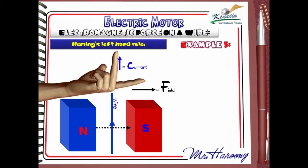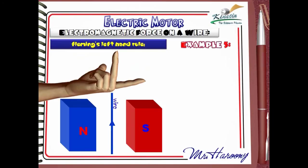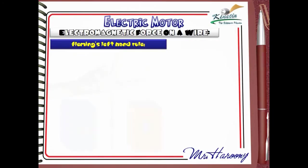The current is given by the second finger and it flows upward relative to the page. According to these directions of the magnetic field and the current, Fleming's Left Hand Rule shows that the wire will be pushed into the page, as shown by the thumb.